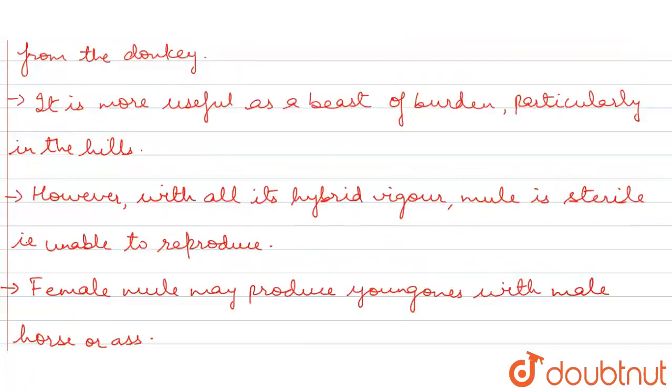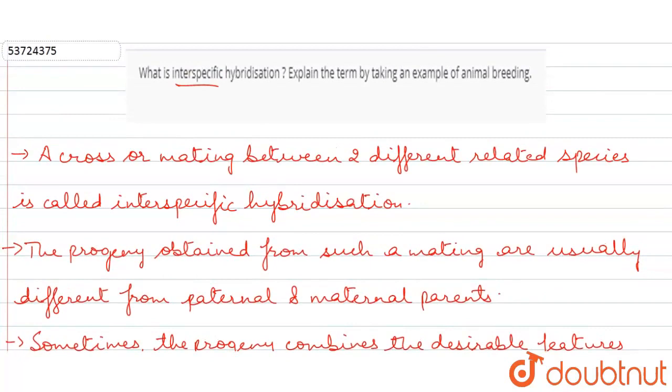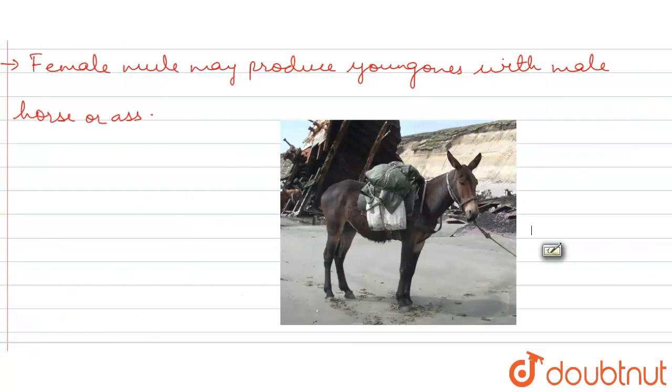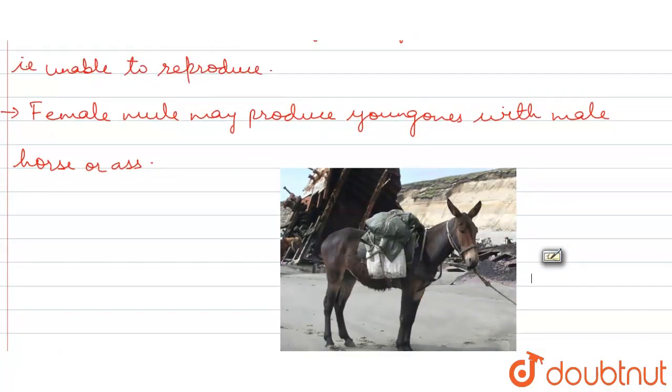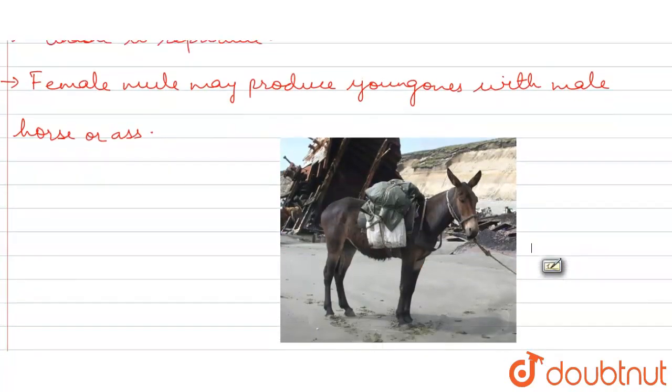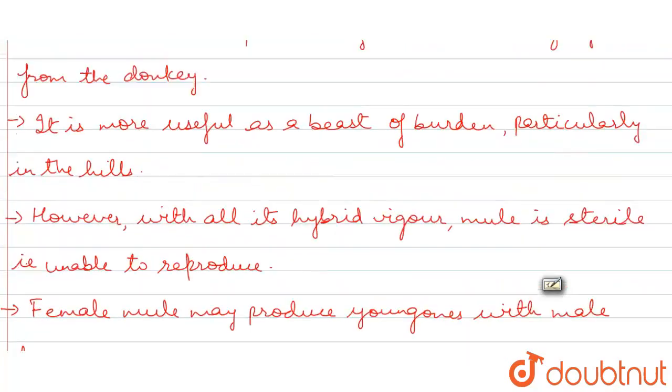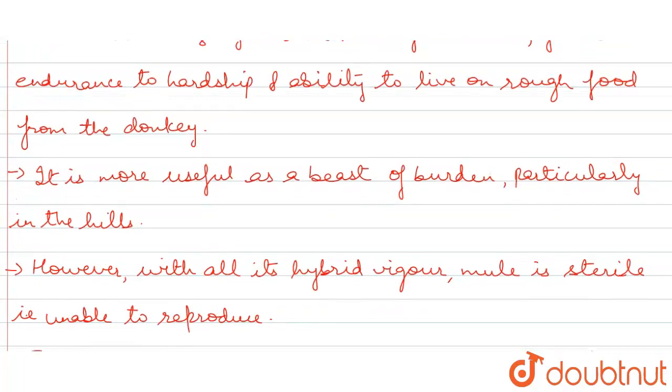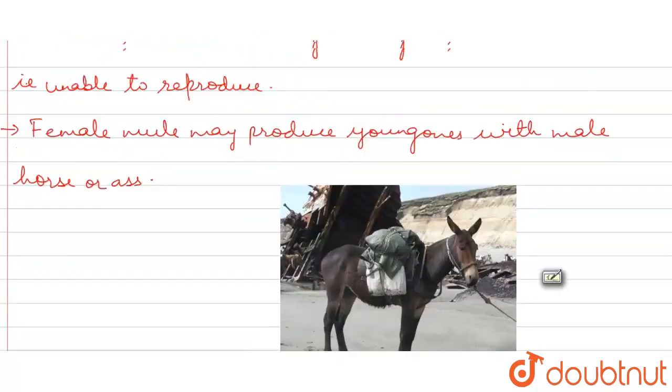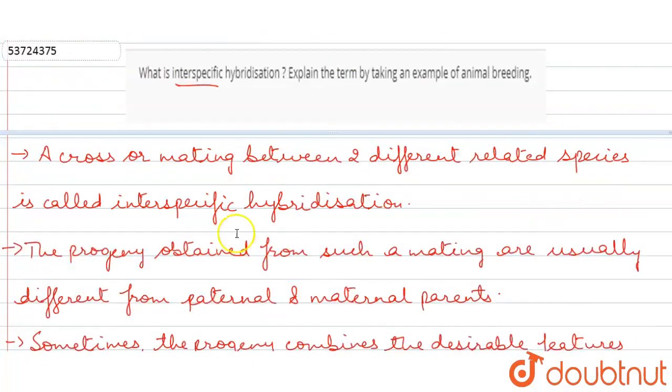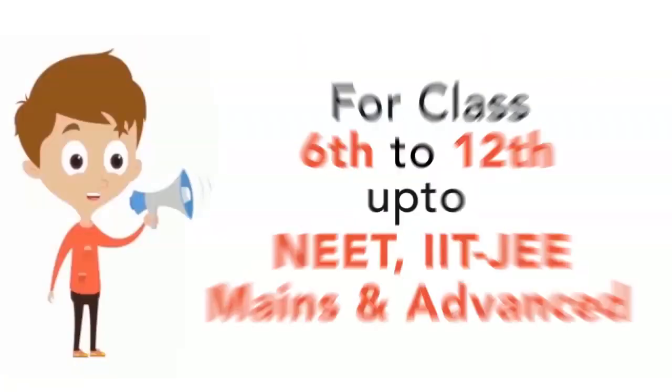So this was our example of interspecific hybridization. The size came from the horse, and the endurance, sure-footedness, and ability to eat rough food came from the donkey. This was the definition of interspecific hybridization plus an example.